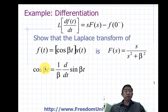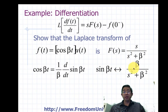We also note that the cosine of beta t can be described by the sine of beta t where we take its derivative and scale it in front of it with one over beta. We also note that sine beta t equals its Laplace transform given by beta divided by s squared plus beta squared.